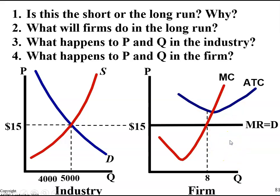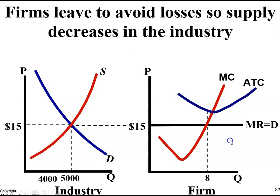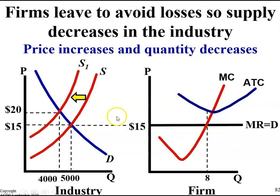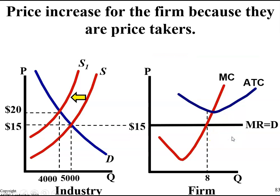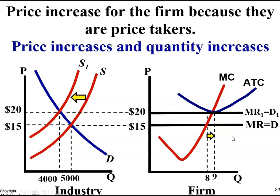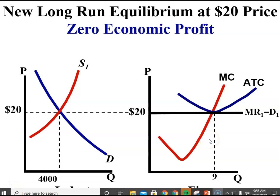At the long run equilibrium price of $10, there's zero economic profit. These graphs reflect the opposite scenario — there are economic losses happening. Some firms are going to decide to leave this industry. As supply shifts to the left in the industry, that will increase the price. So the new long run equilibrium price of $20 represents zero economic profit.